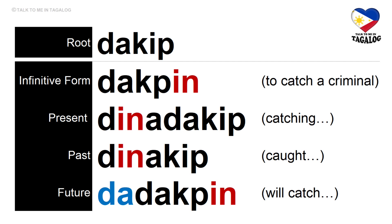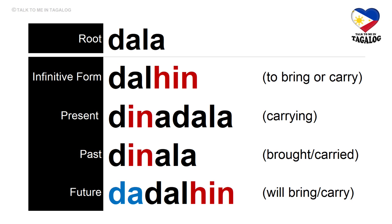Root word: dakip. Infinitive form: dakpin — meaning to catch a criminal. Present tense: dinadakip — catching a criminal. Past tense: dinakip — caught a criminal. Future tense: dadakpin — will catch a criminal.